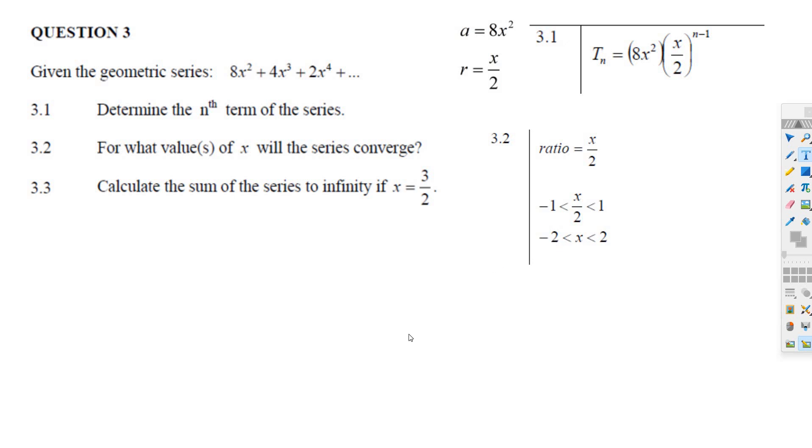the sum to infinity, all you do is write down the formula for the sum to infinity. There it is. A over 1 minus R. A is 8x squared. You've got 1 minus x over 2.